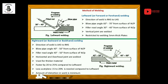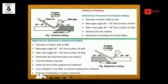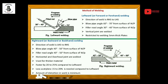The rightward technique is more suitable for horizontal and overhead joints and is preferred for thicker materials where leftward is not possible. It is faster by 20 to 25 percent compared to leftward, reducing metal joining time and increasing profit. It also uses 15 to 20 percent less acetylene than leftward, lowering gas consumption, and the amount of distortion in the workpiece is minimized. Overall, the rightward technique is more suitable than the leftward technique.